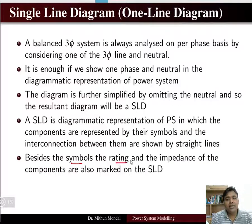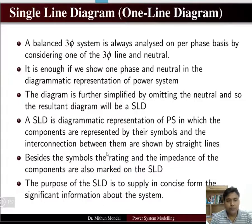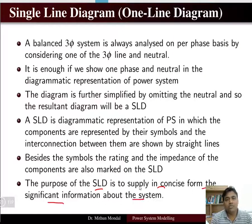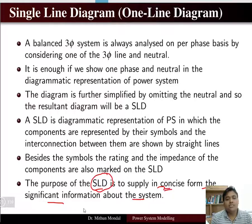Besides the symbols, the ratings and impedances of the components are also marked. Whatever component is used, its rating will be represented beside its symbol. The purpose of a single line diagram is to supply in concise form the significant information about the system, since a power system can be complex in nature.